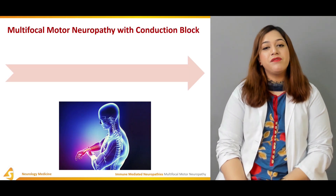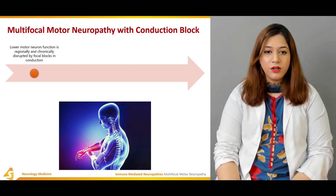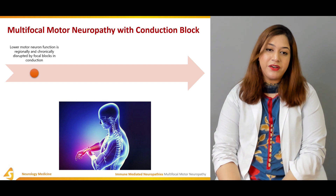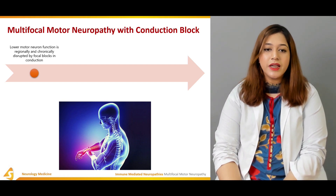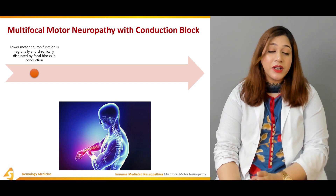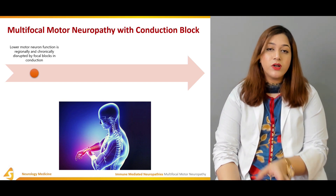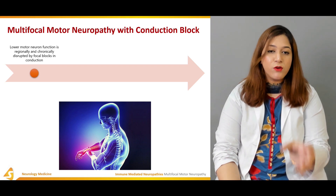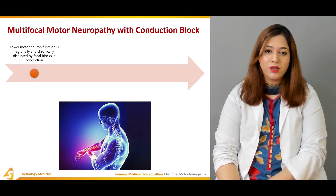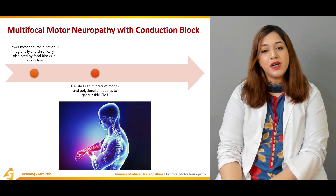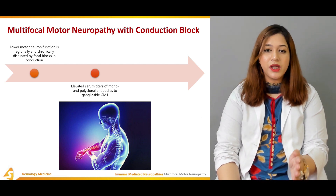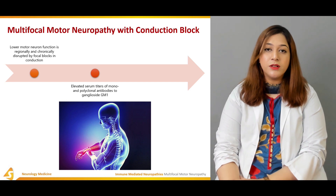There is a variant: multifocal motor neuropathy with conduction block. In this variant, lower motor neuron function is regionally and chronically disrupted by focal blocks in conduction — not a complete block, but focal blocks. Elevated serum titers of mono- and polyclonal antibodies to ganglioside GM1 are found in association with these focal blocks.